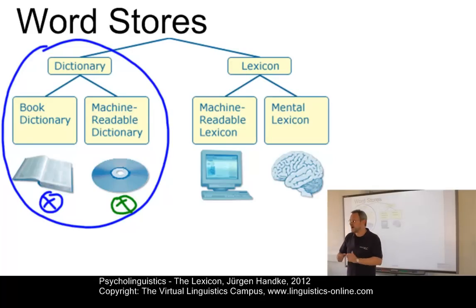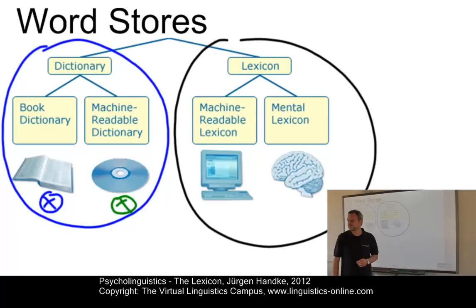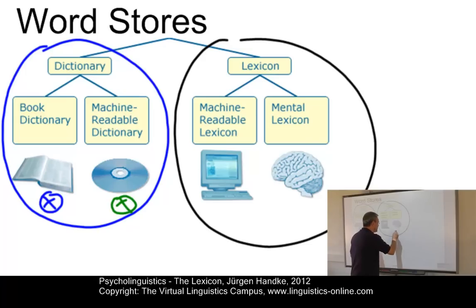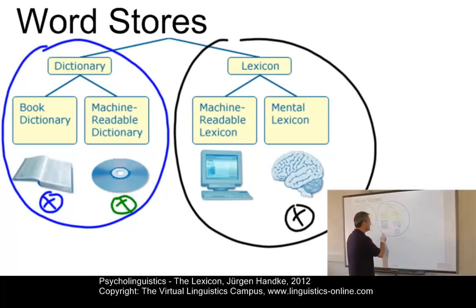Machine readable dictionaries are similar; however, they are delivered on specific storage devices such as CD-ROMs or the World Wide Web. A lexicon, by contrast, is the word store which is the central component of a natural language processing system. This can be a human processing system — humans themselves — or a processing system which is part of a computer program, for example a machine translation program. So that is this component here, which is the machine.